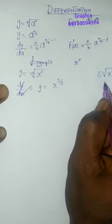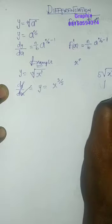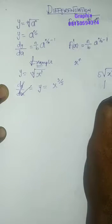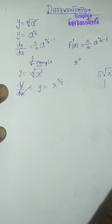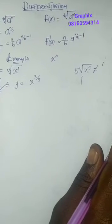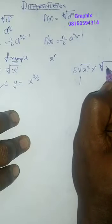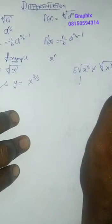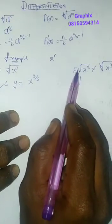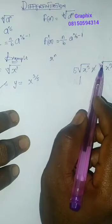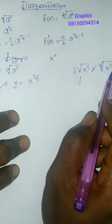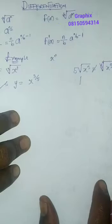Please don't confuse: the fifth root of x³ is not equals to 5 times the square root of x³. They are two different things. This means 5 times the square root of x³, this means the fifth root of x³. Please don't confuse both of them.